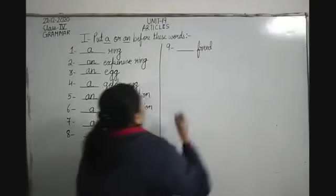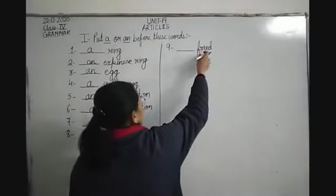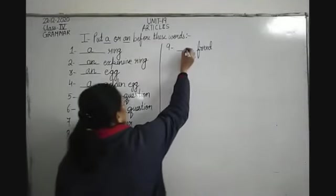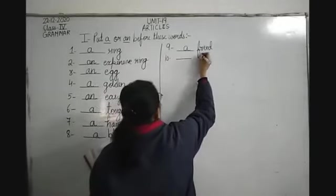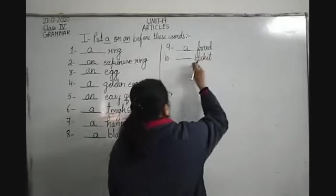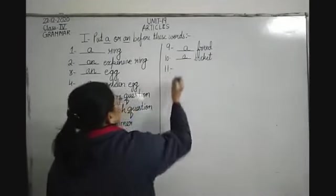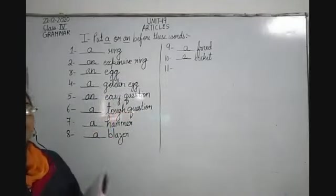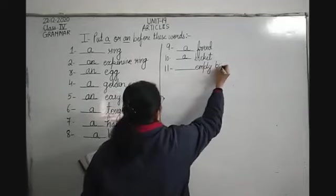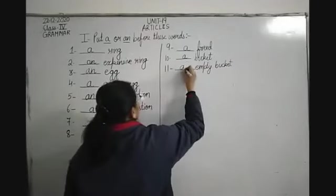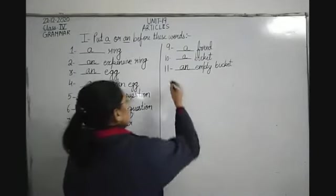Ninth: dash friend. The word friend starts with F which is a consonant and has a consonant sound, so we write A friend. Tenth: dash bucket. Bucket starts with a consonant and has a consonant sound, so A bucket. Eleventh: dash empty bucket. Empty starts with E which is a vowel and has a vowel sound, so AN empty bucket.